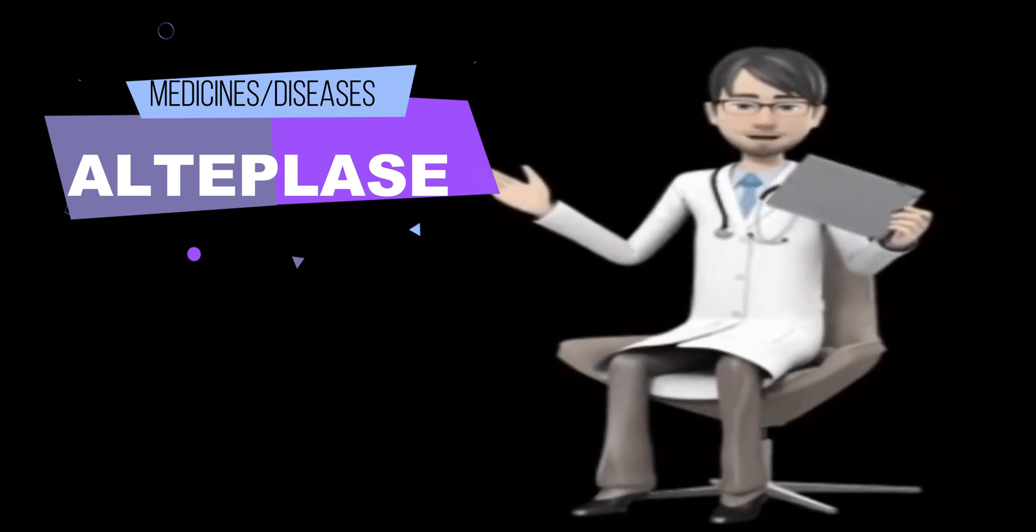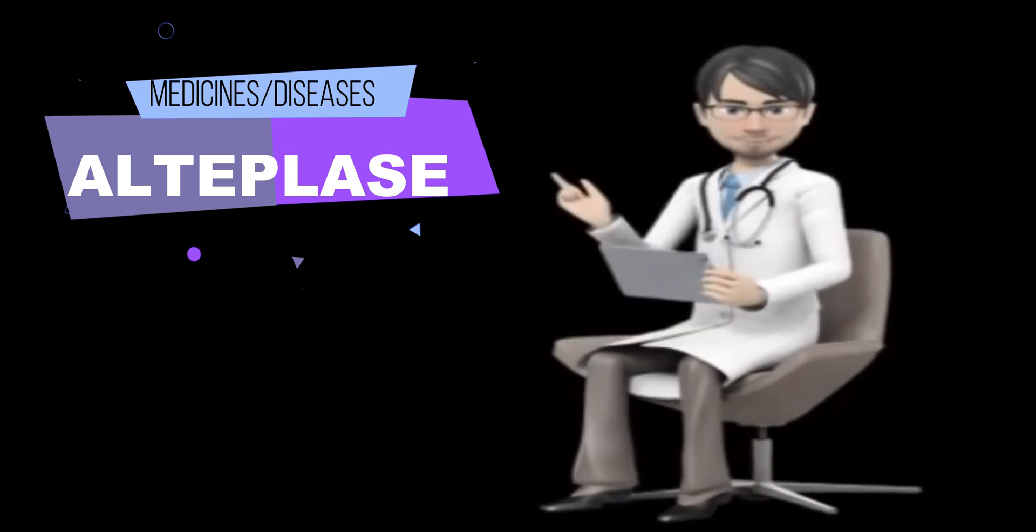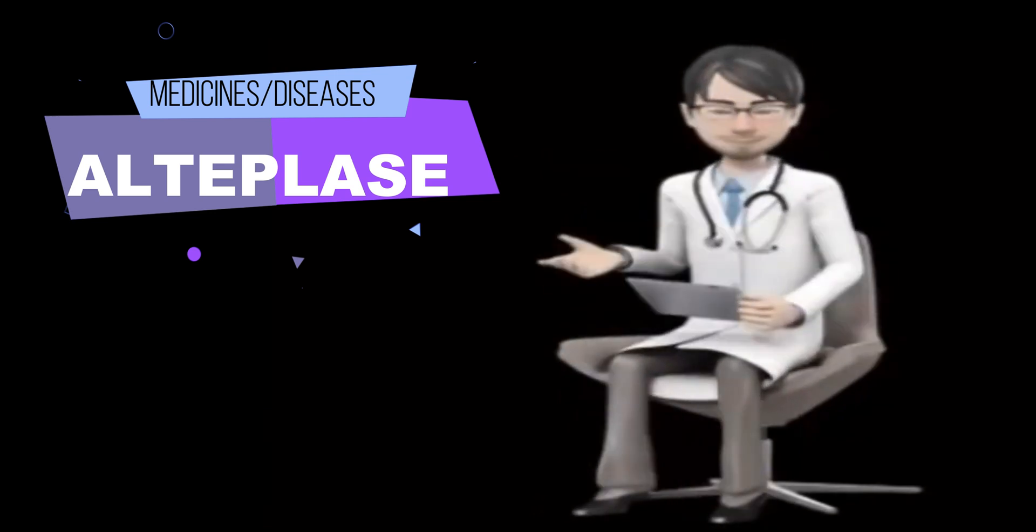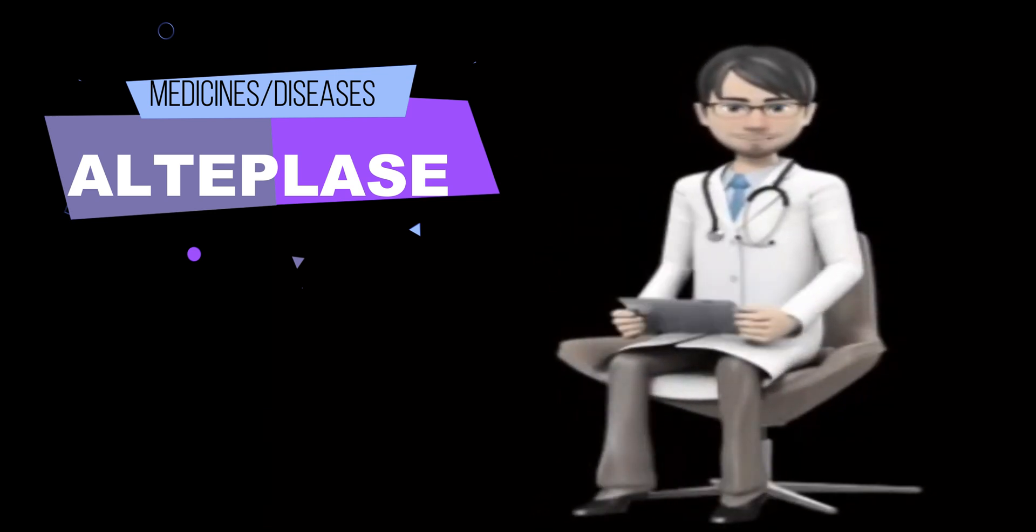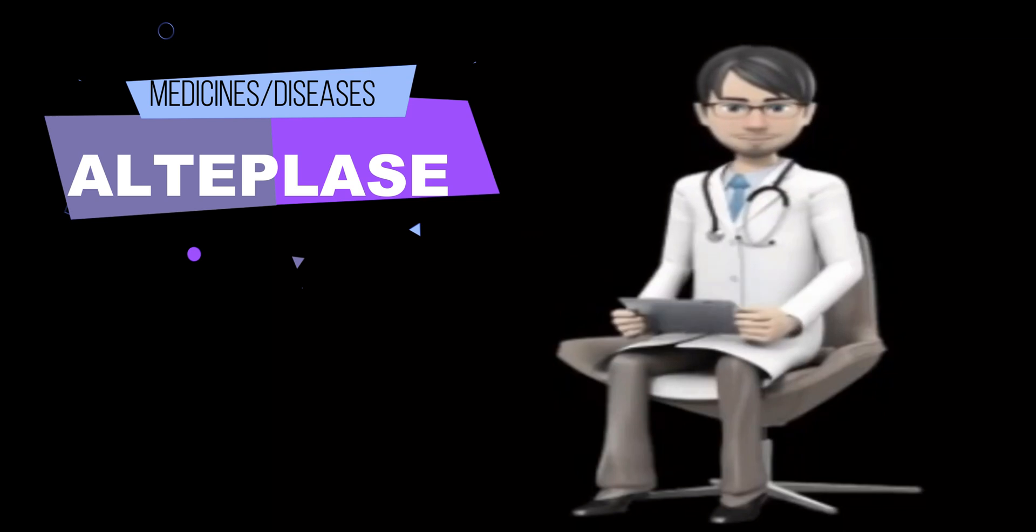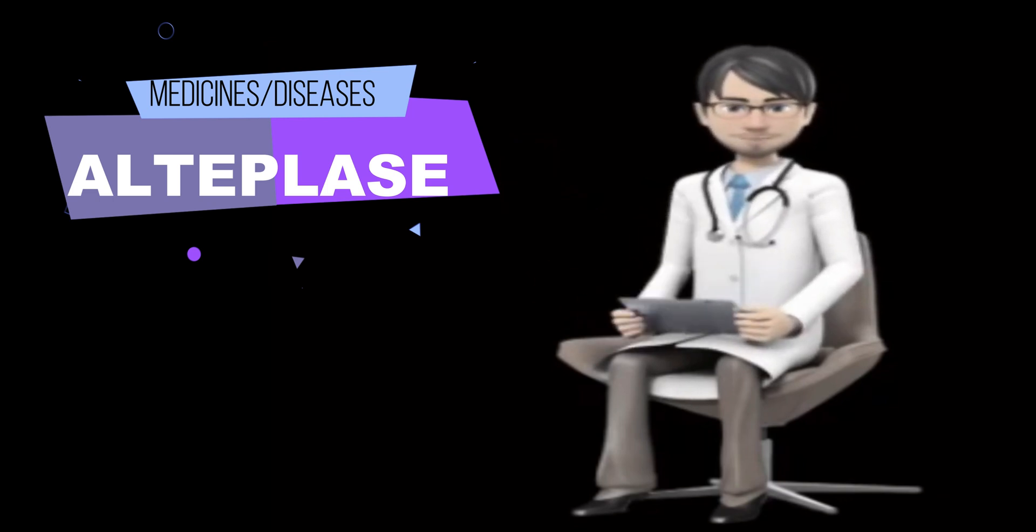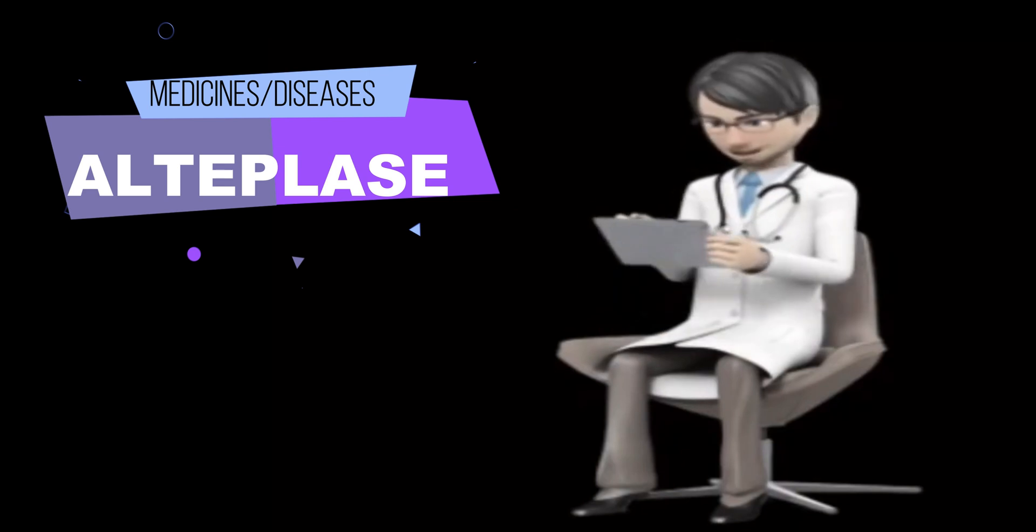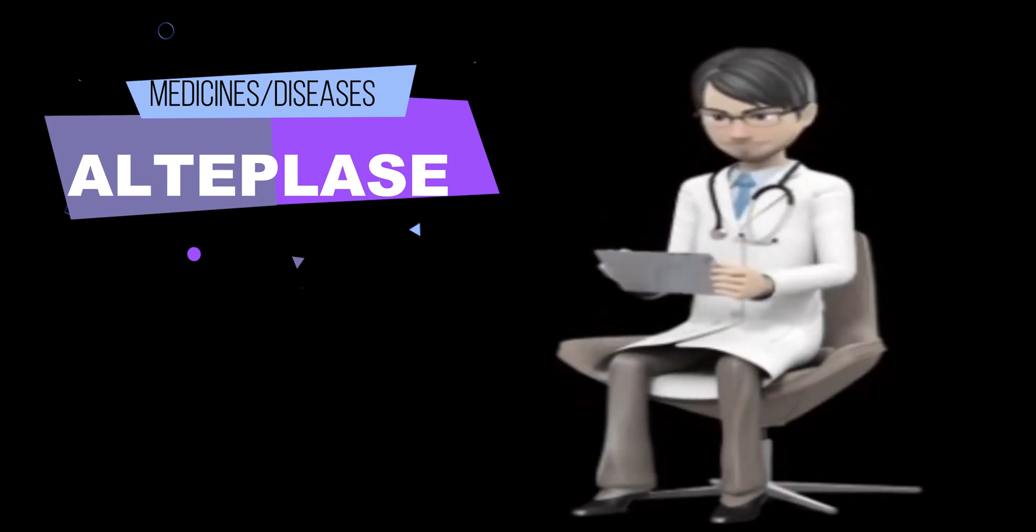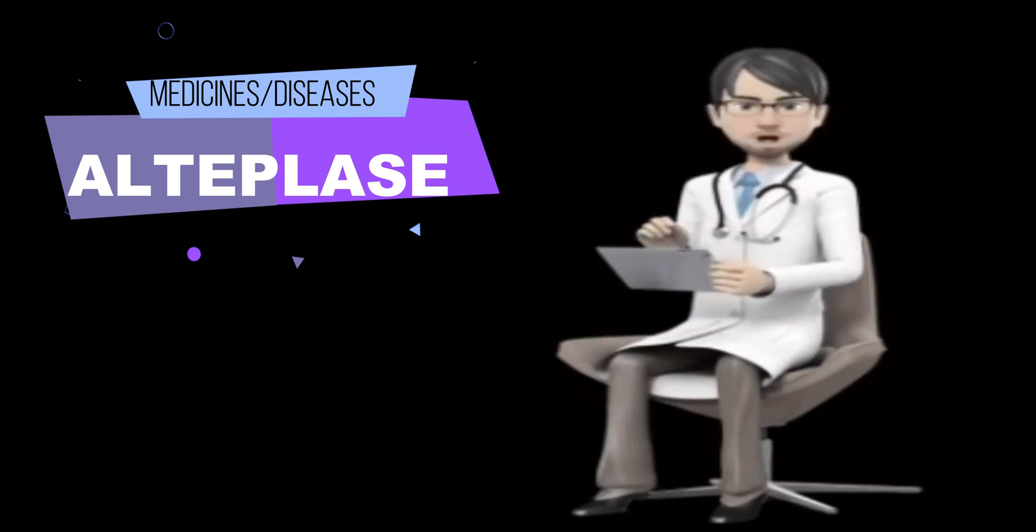Call your doctor or get emergency medical help if you have signs of bleeding, such as sudden headache, feeling very weak or dizzy, bleeding gums, nosebleeds, easy bruising, bleeding from a wound, incision, catheter, or needle injection, bloody or tarry stools, coughing up blood or vomit that looks like coffee grounds, red or pink urine, heavy menstrual periods or abnormal vaginal bleeding, or sudden numbness or weakness, especially on one side of the body, slurred speech, or problems with vision or balance.